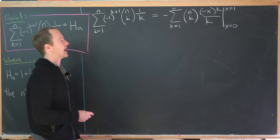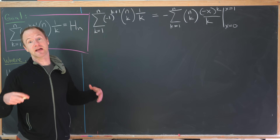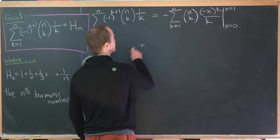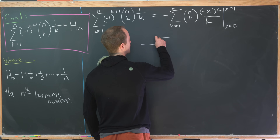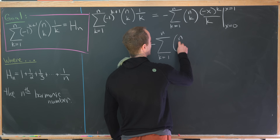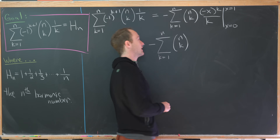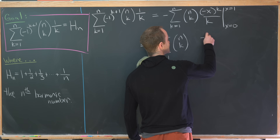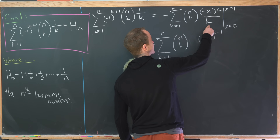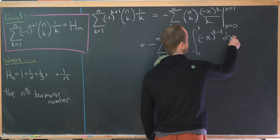Taking the derivative with respect to x — transforming the 0th integral into a first integral via the fundamental theorem of calculus — gives us: minus the sum as k goes from 1 to n of n choose k times (-x)^(k-1), with the integral from 0 to 1 dx. The k in the numerator cancels the k in the denominator.